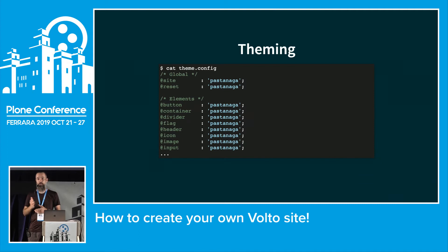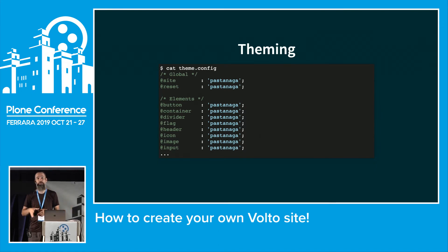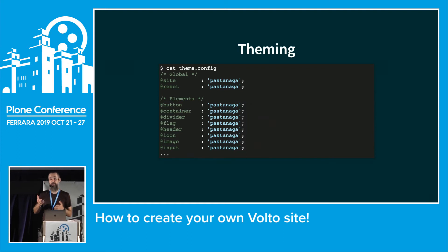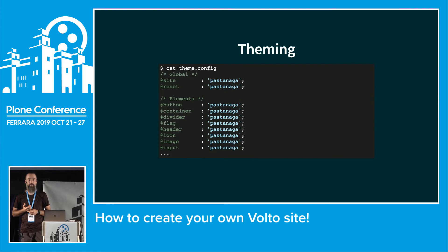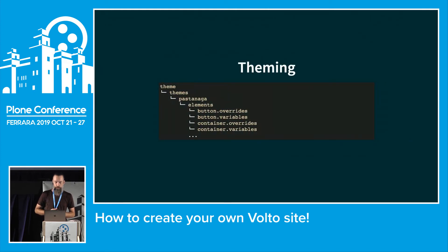Theming is basically three steps: the default styling from Semantic UI, the theme you specify (usually Pastanaga), and your own theming folder where you can override everything. That means if you want to change something only for your own site, you do it in your package. If you want a reusable theme for multiple sites, you create a separate theme package.